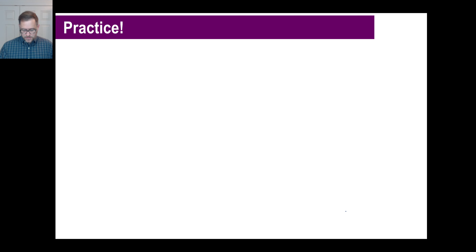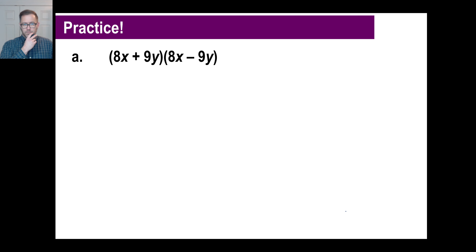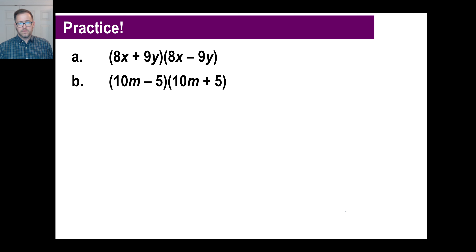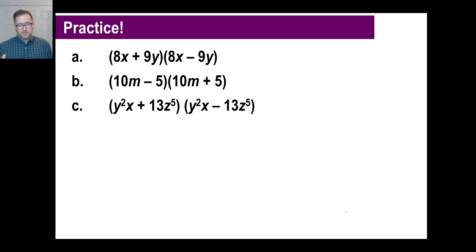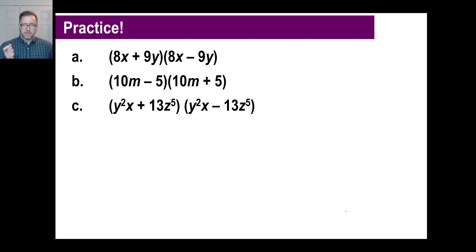Try your practice problems. For A: set it up as a factoring problem — the square root of 64 and 81, with one plus and one minus. For B: it's similar; notice I put the minus first and the plus second — it doesn't matter which order, since 3 times 7 is the same as 7 times 3. For C: it's a bit more involved. Y to the fourth — chop the exponent in half — gives y squared as the square root. X squared gives x. Then the square root of 169: since the square root of 144 is 12, try 13 — yes! And z to the 10th chopped in half is z to the 5th.